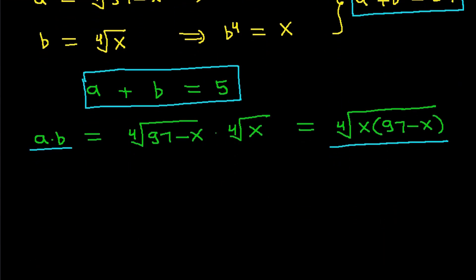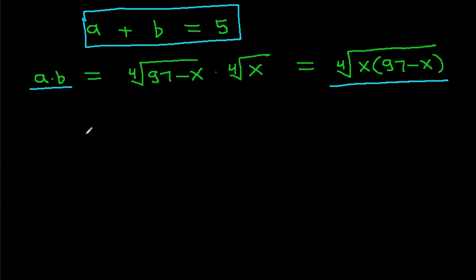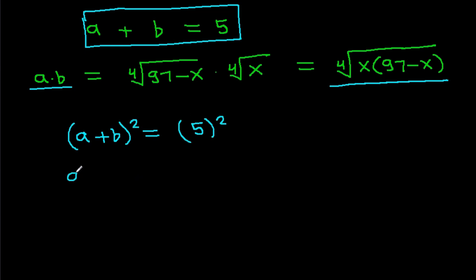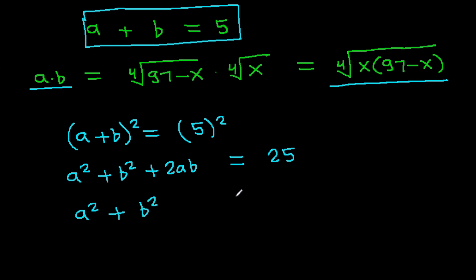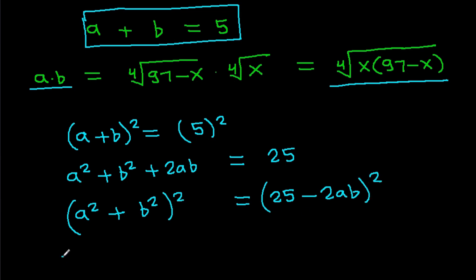Now, we have a plus b equals 5. If we square both sides, then a squared plus b squared equals 25 minus 2ab. If we square both sides again, then a to the power 4 plus b to the power 4 plus 2a squared b squared equals (25 minus 2ab) squared.